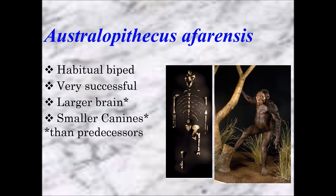So we see a pattern: more bipedal, larger brains, smaller canine teeth over time. There's also a reconstruction on the right showing an Australopithecus afarensis looking nervous — like watching for a lion. Their escape mechanism was still climbing up in a tree. They were still better climbers than us, but much more habitual walkers.